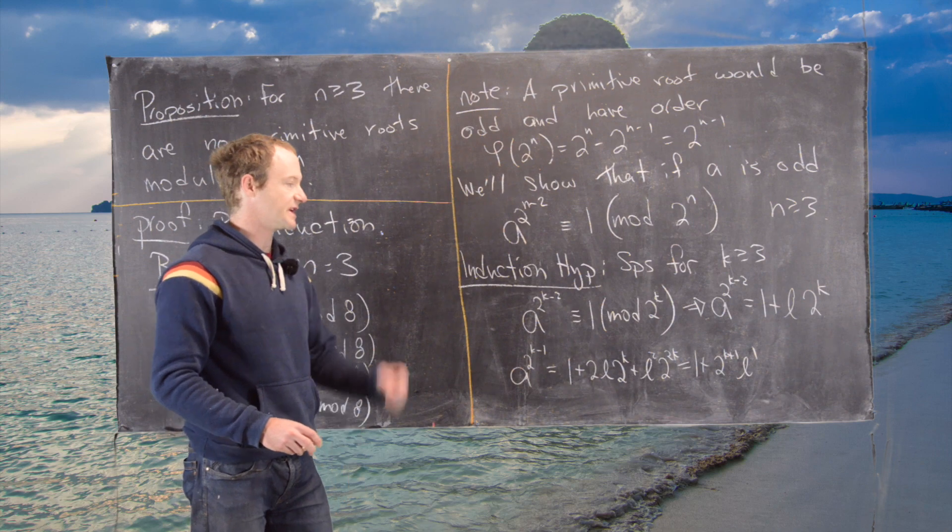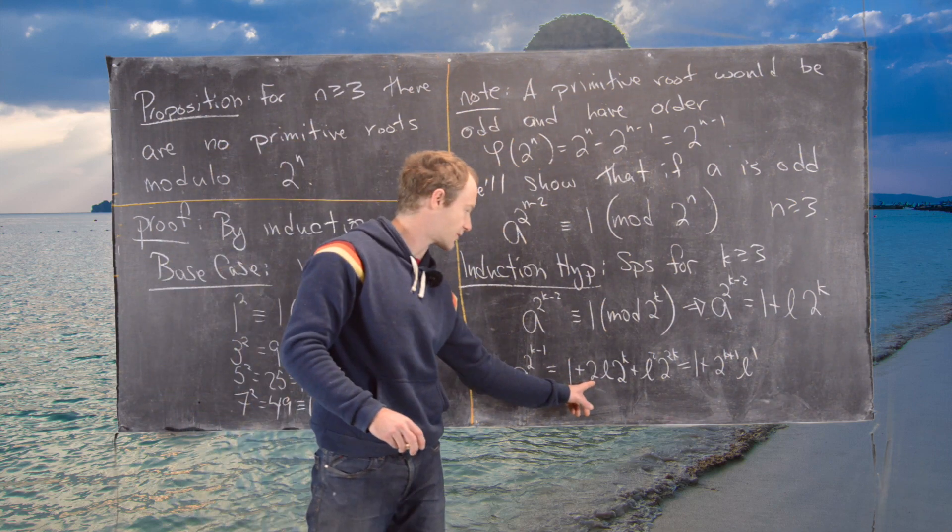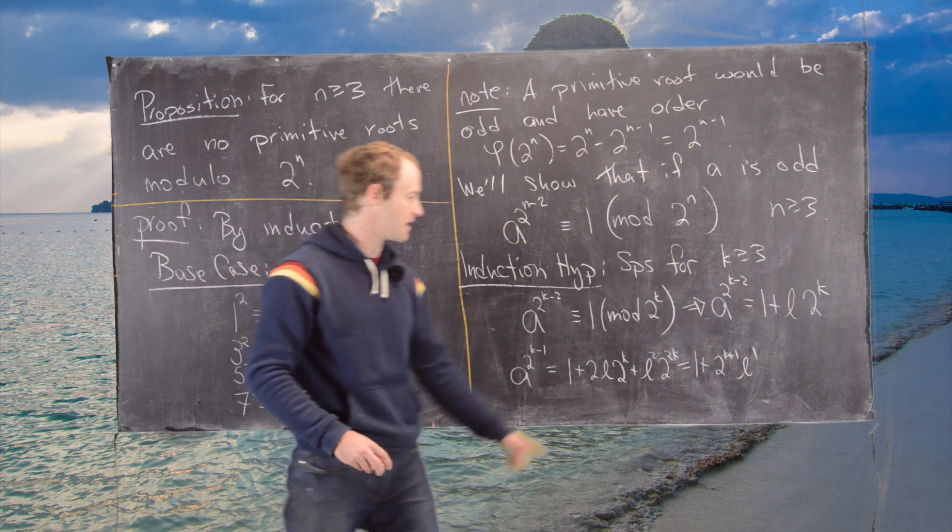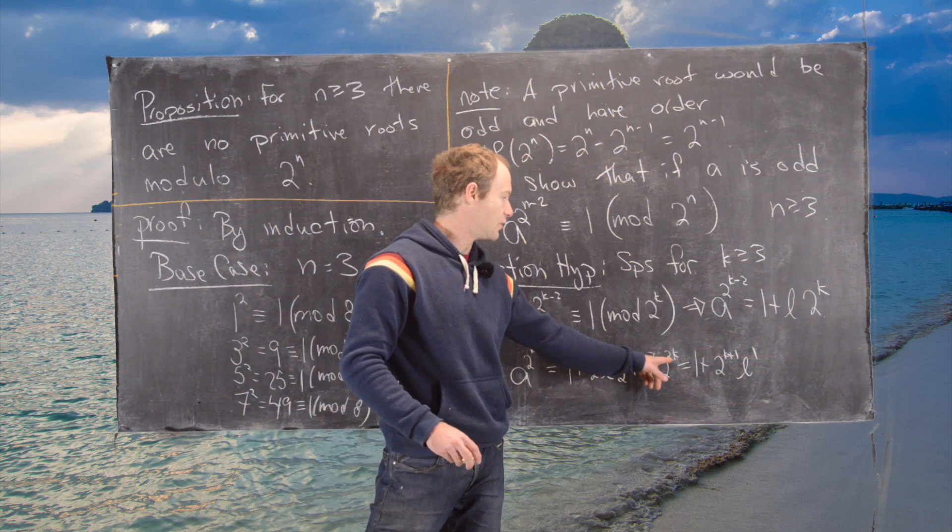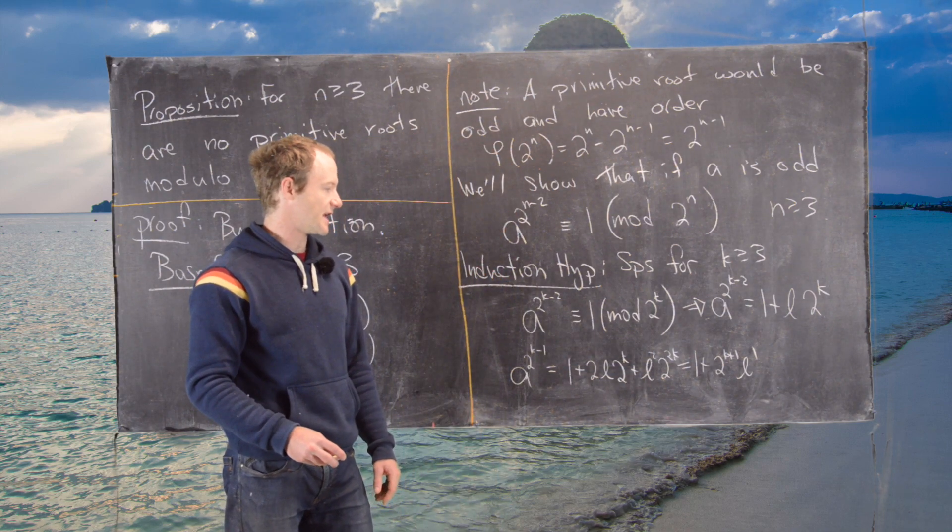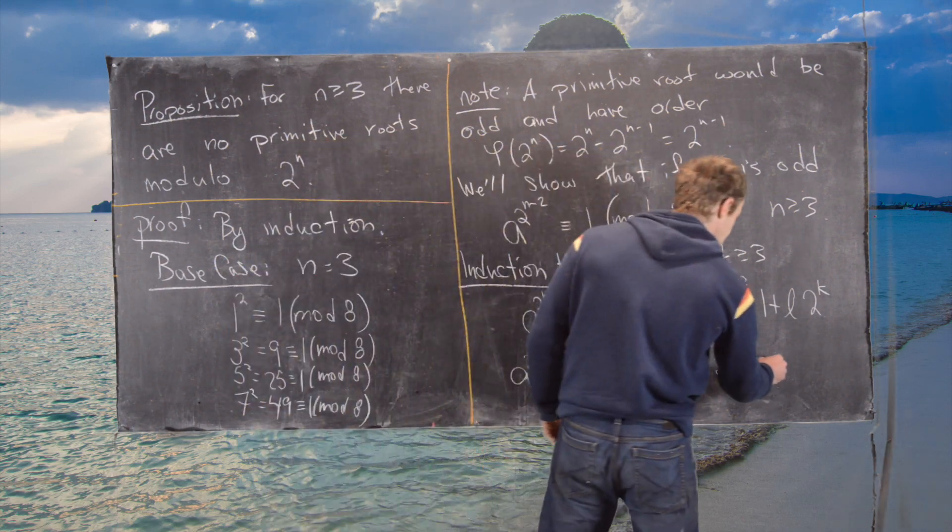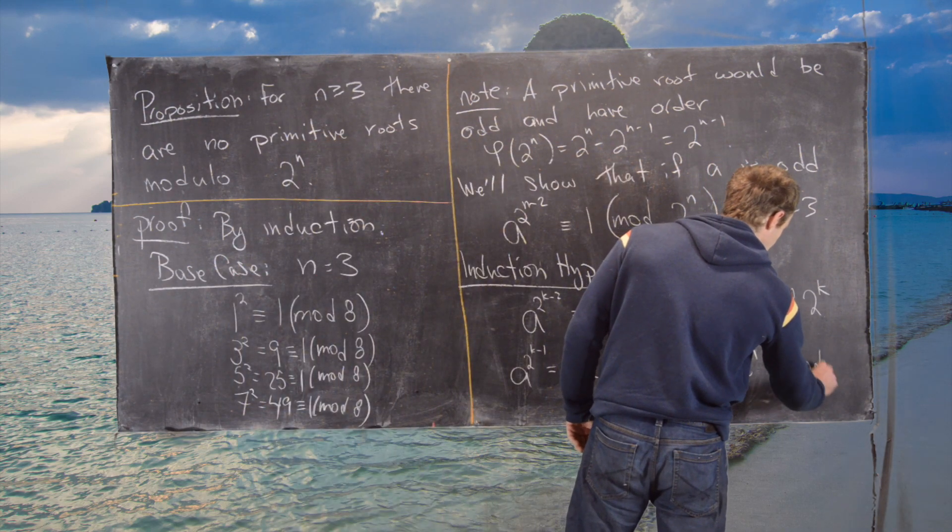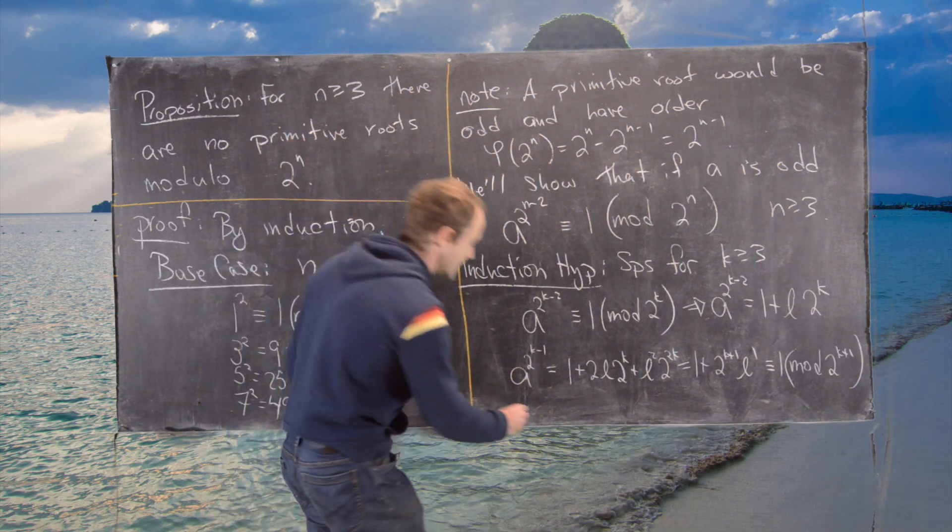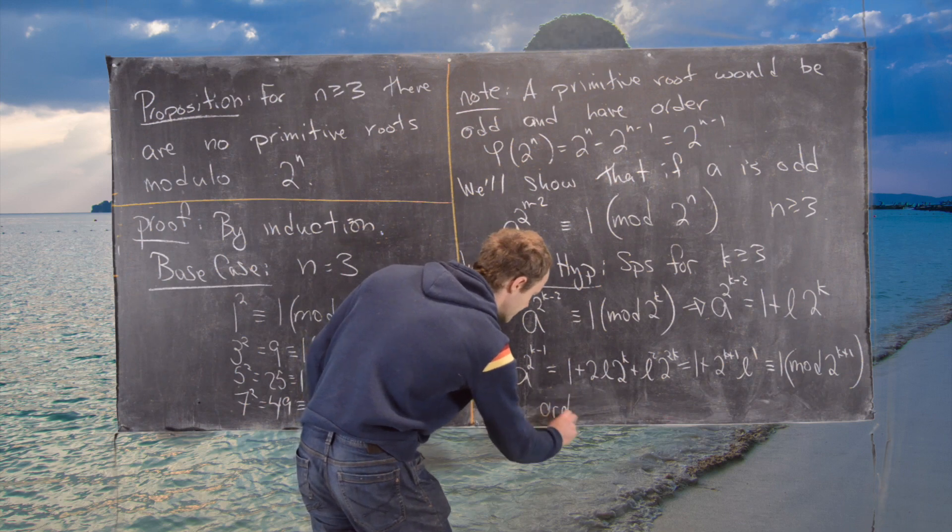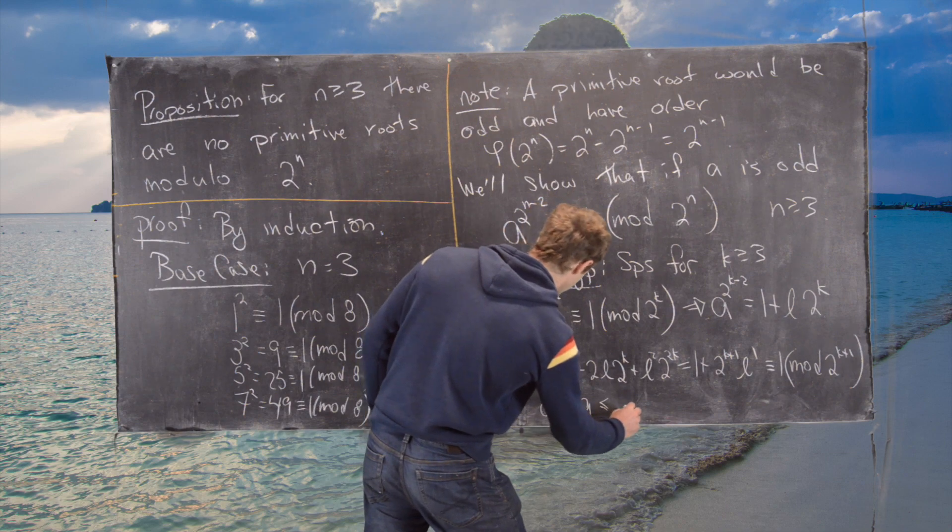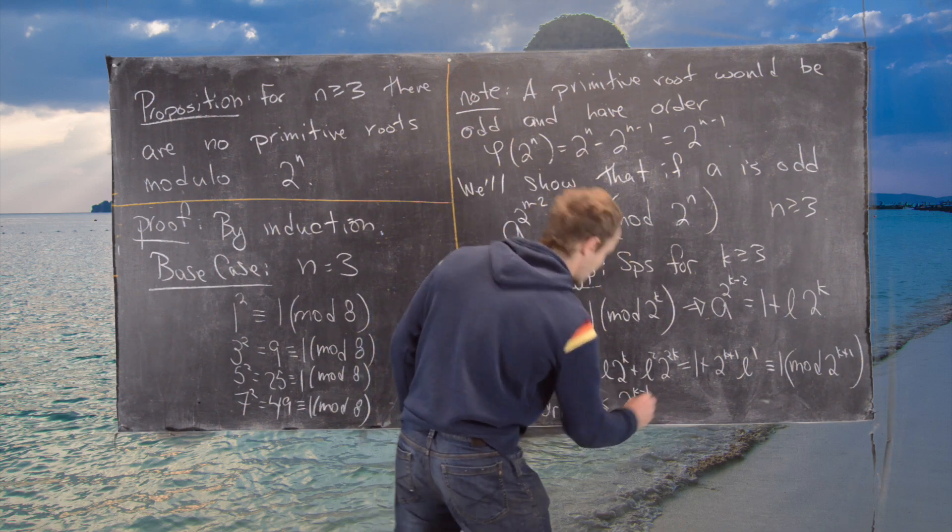But now notice we can write all of that as 1 plus 2k plus 1 times l prime, where l prime is what we get from putting all that together. Notice here we have 2 multiplying onto 2k gives us 2k plus 1. And then since k is bigger than or equal to 3, we know that 2k is bigger than k plus 1. So we can factor a 2 to the k plus 1 out. But now notice that this is equal to 1 mod 2k plus 1. And that tells us that the order of a is less than or equal to 2 to the k minus 1.